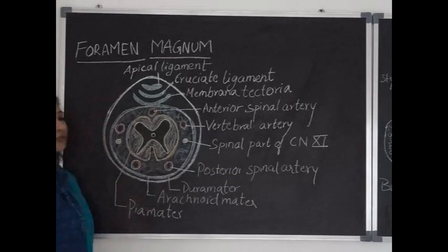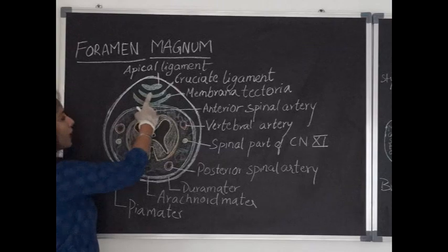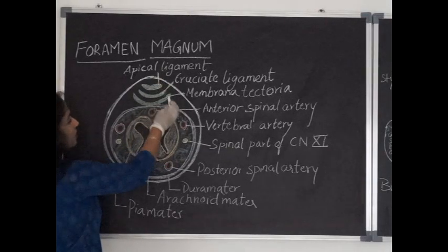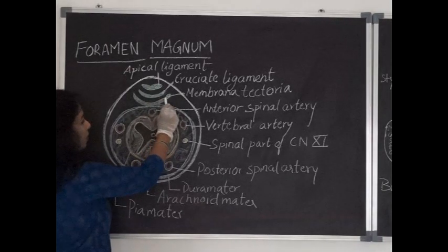The contents of foramen magnum are from the anterior side, apical ligament of dens, cruciate ligament, vertical band of cruciate ligament and membrana tectoria.